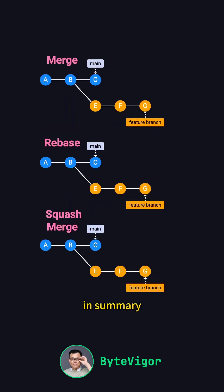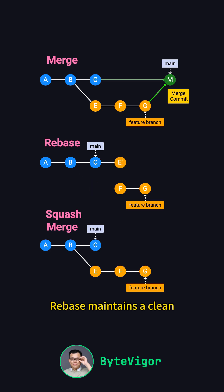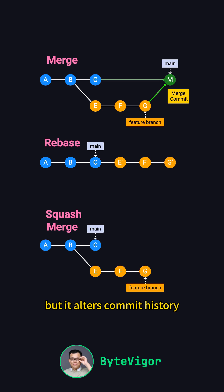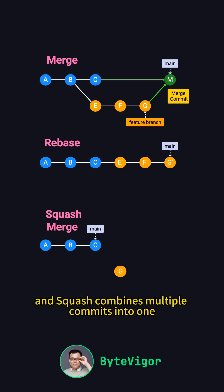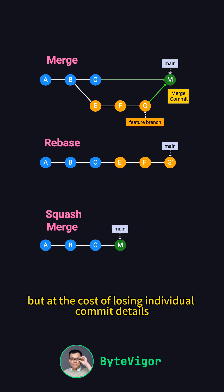In summary: Merge keeps a full commit history and creates a merge commit. Rebase maintains a clean, linear history by reapplying commits, but it alters commit history. And Squash combines multiple commits into one, which simplifies the commit history, but at the cost of losing individual commit details.